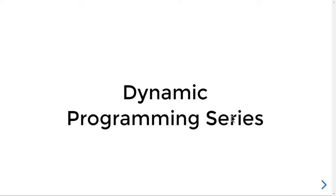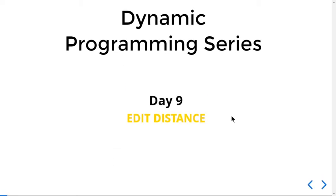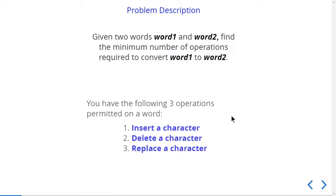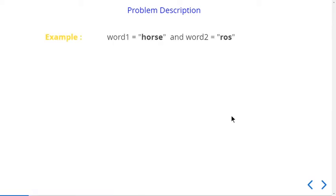Hi guys, today we are at day 9 of the dynamic programming series and the problem that we are doing today is Edit Distance. What is the problem? You are given two words, word1 and word2, and you have to find the minimum number of operations required to convert word1 to word2. The three operations permitted are: inserting a character, deleting a character, and replacing a character.